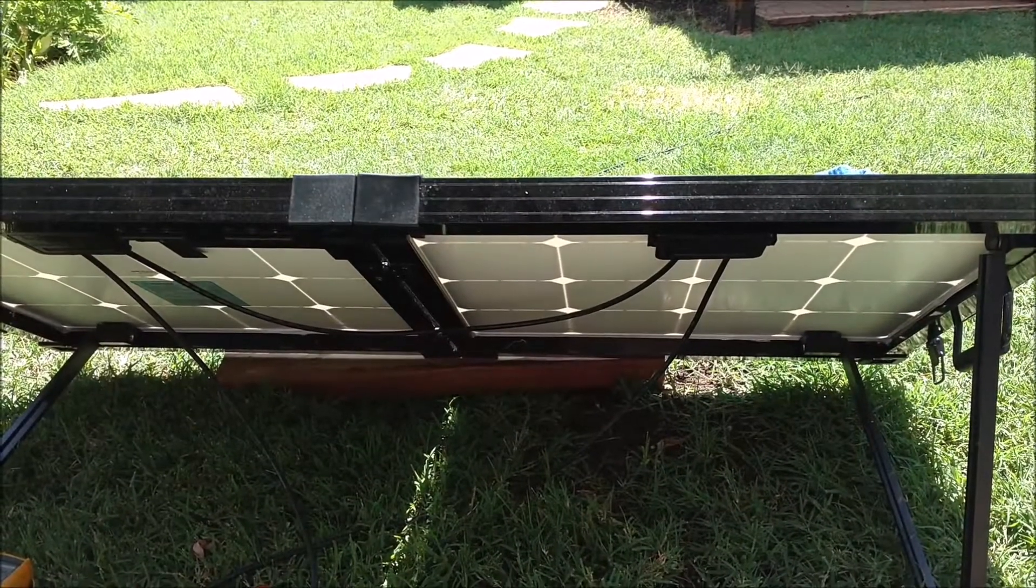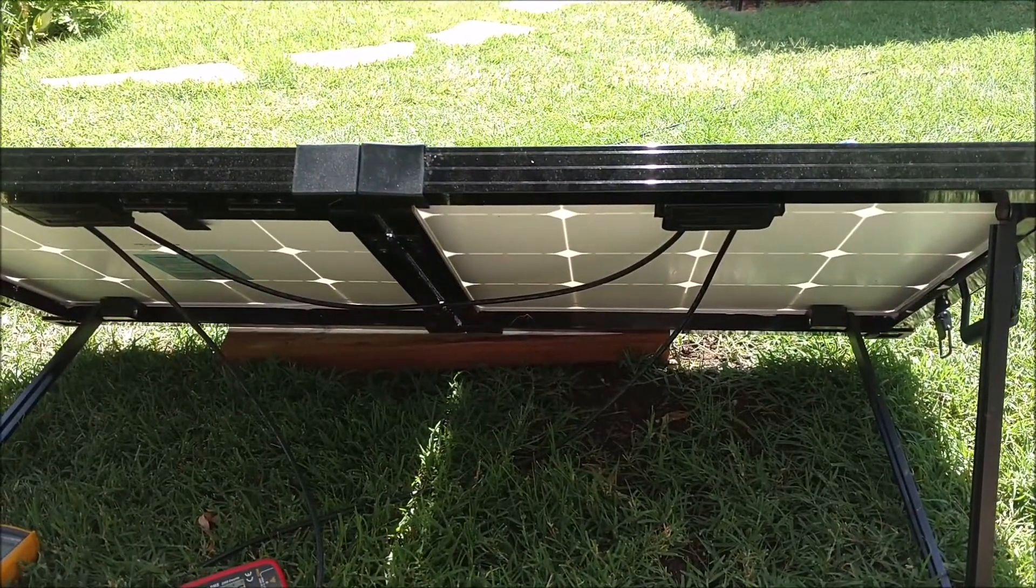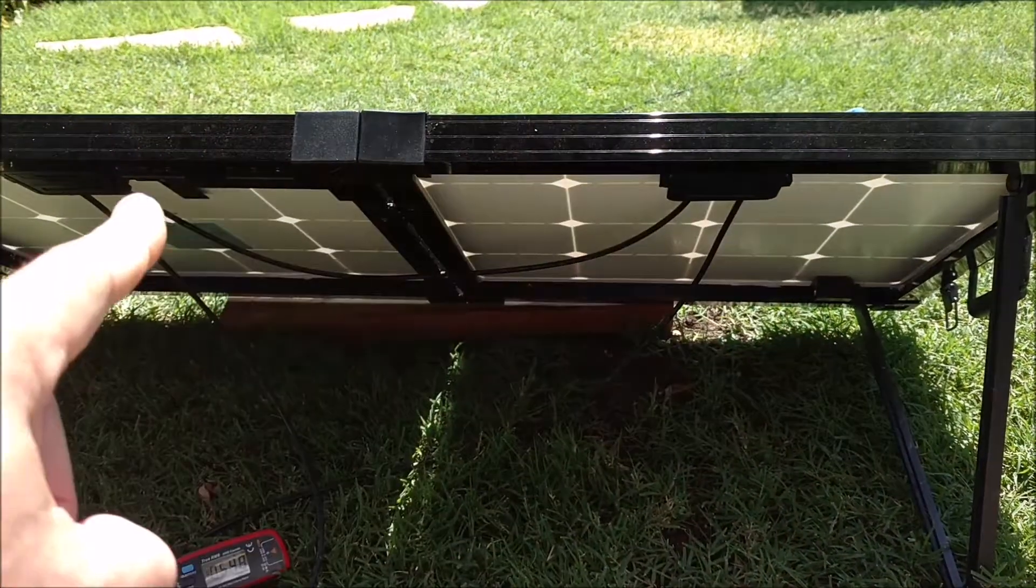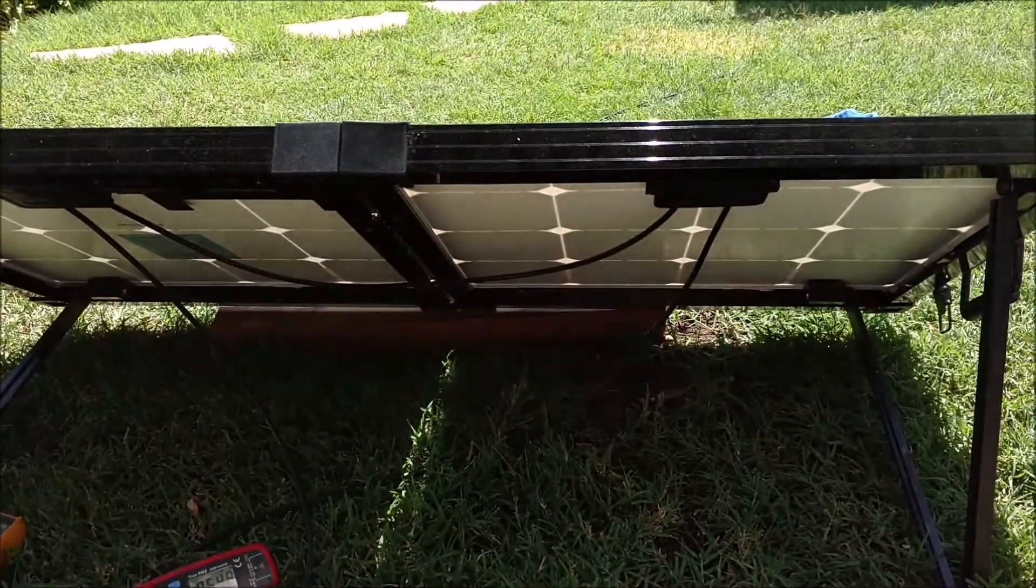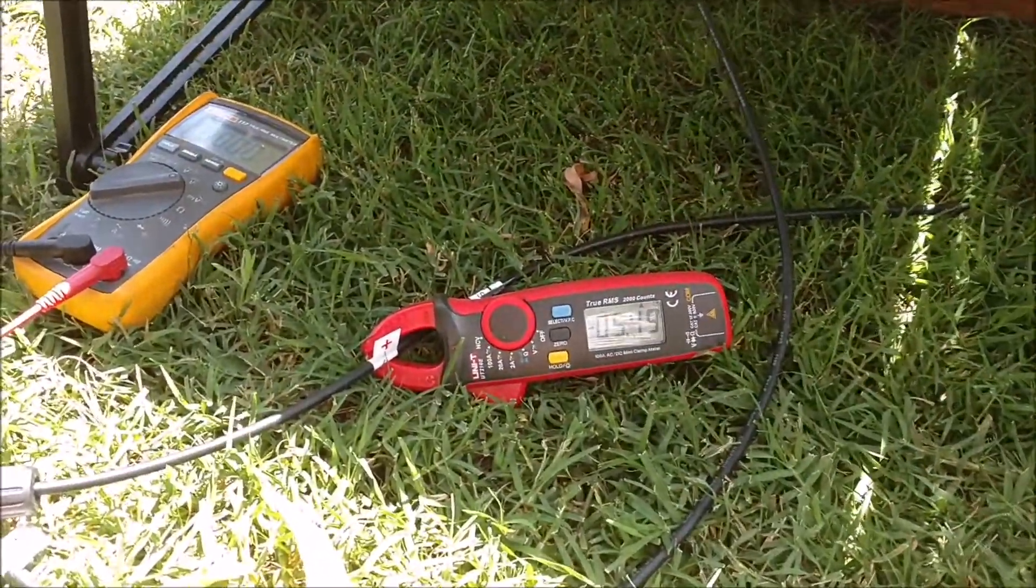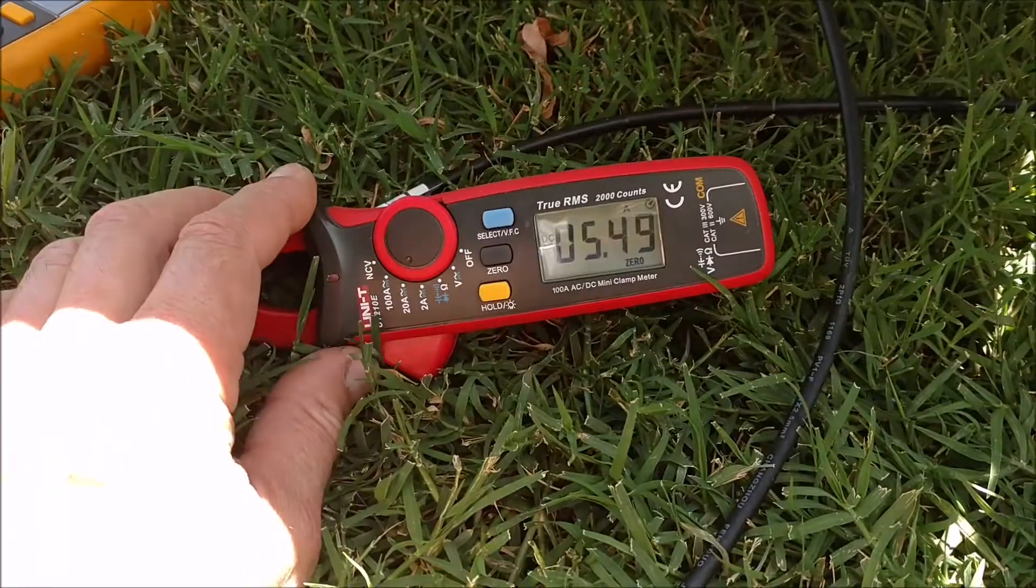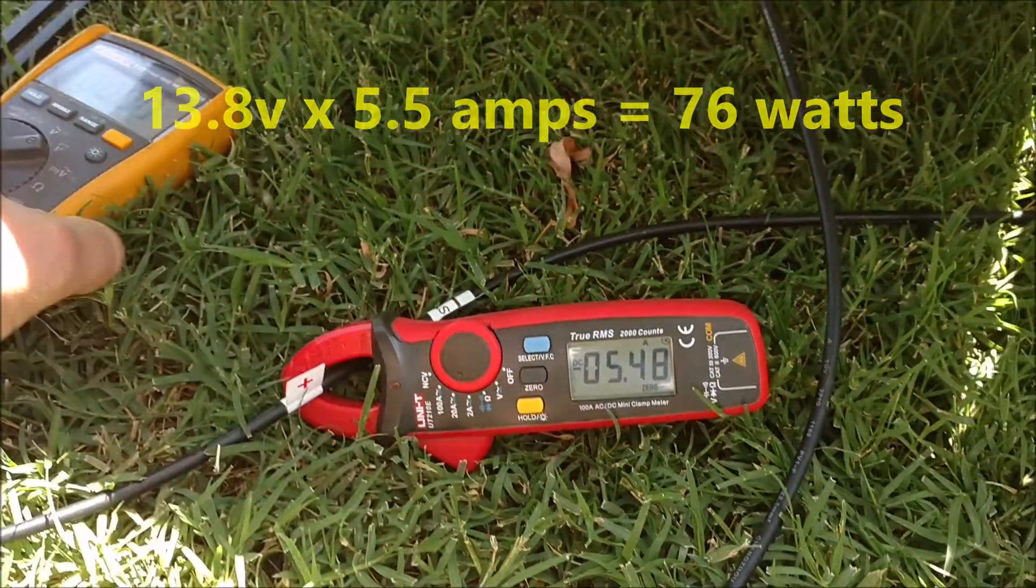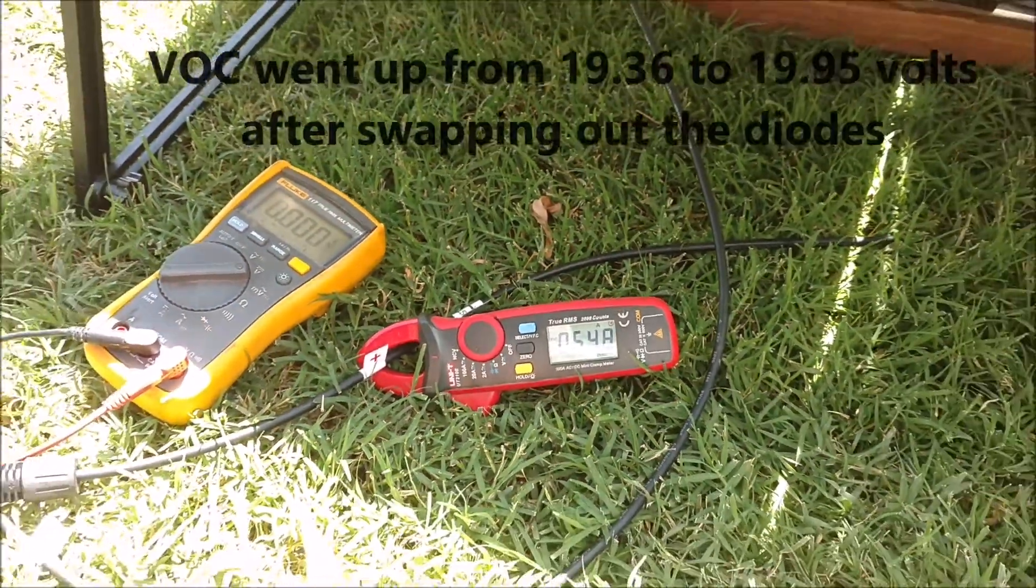Alright, got this 100-watt Energy Eclipse solar panel pointing right at the sun, and I replaced the diodes last night. Check out the power: 5.5 amps. I also checked the voltage, and it's up a little bit.